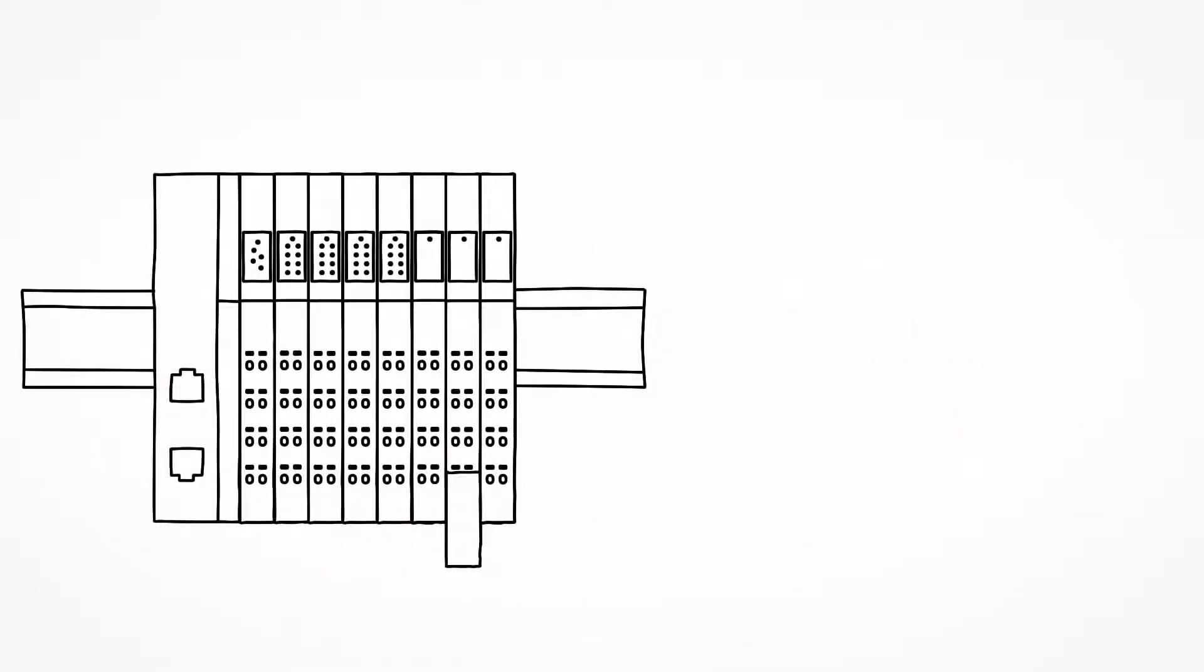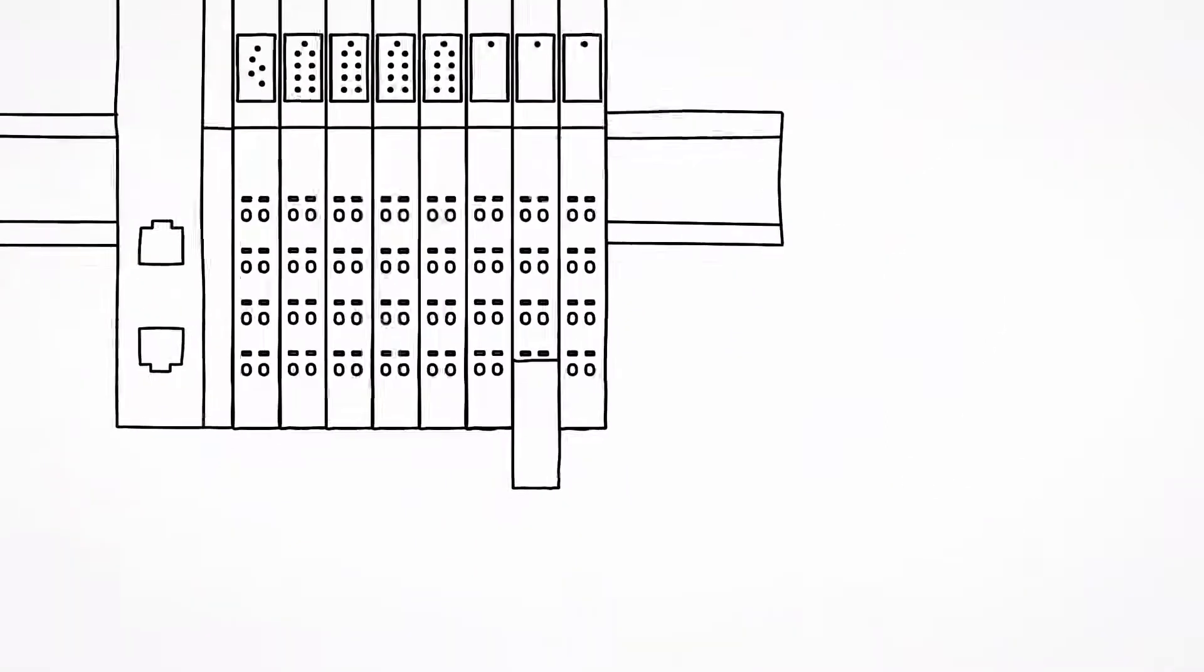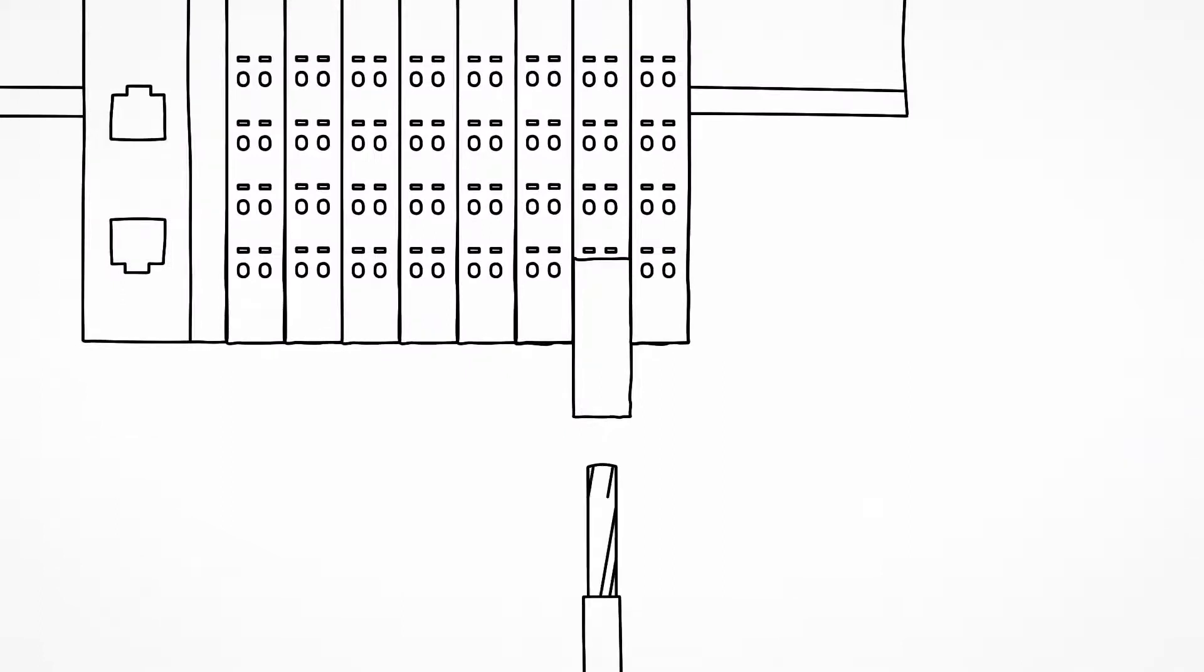Signals from the sensor actuator level are connected to the I.O. terminals simply by means of the spring cage connection system. The shield for sensitive signals can simply be placed on the integrated shield clamp.